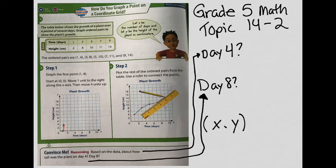So on the left side of the page here I have a data chart. In this chart I have time in days and height in centimeters. I'm going to look at these points in the data chart as ordered pairs, which they've done for us below. The X coordinates are across the top and the Y coordinates are across the bottom. So the ordered pairs are 1, 4, then 3, 8, then 5, 10, then 7, 11, and 9, 14.